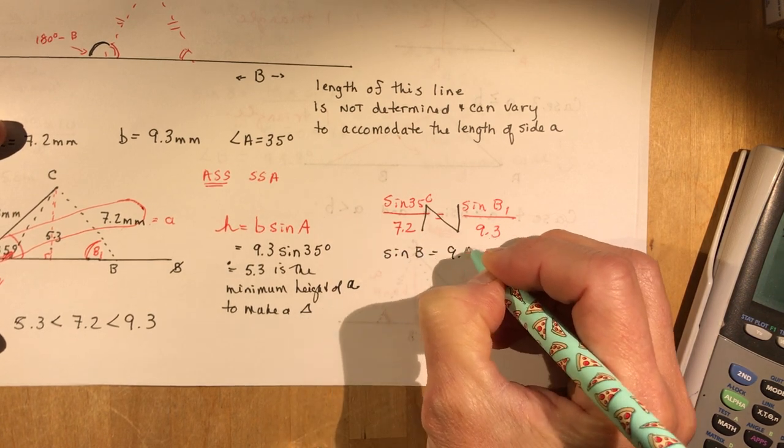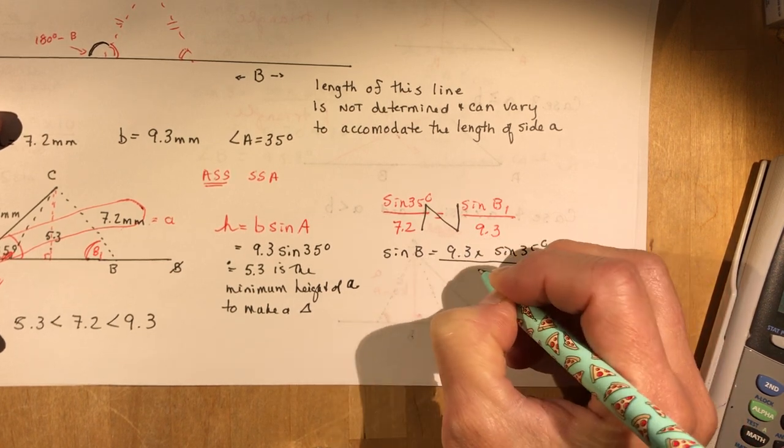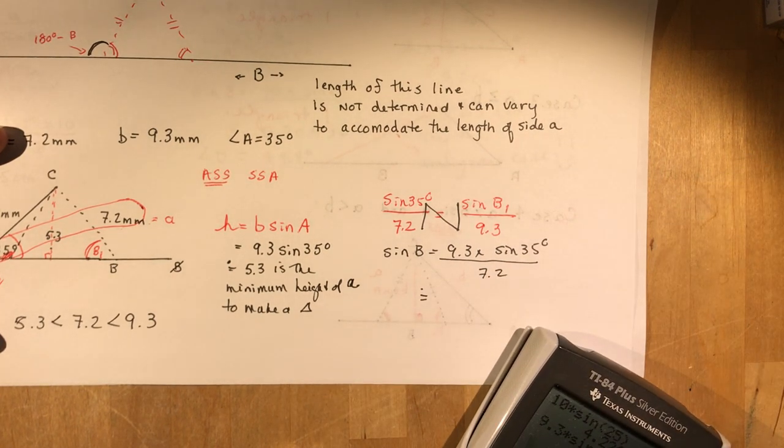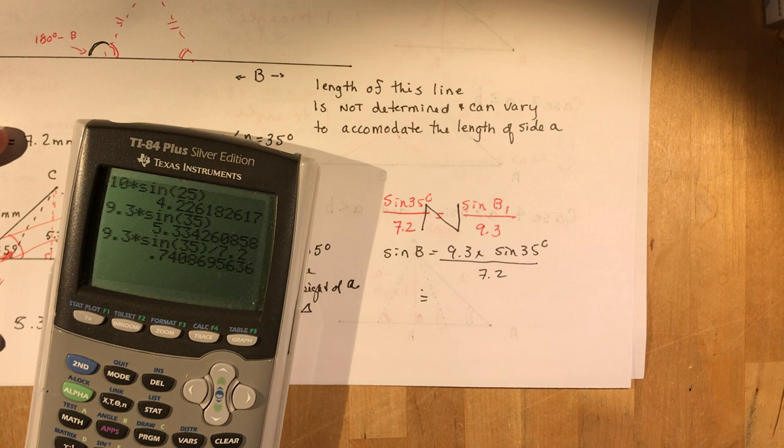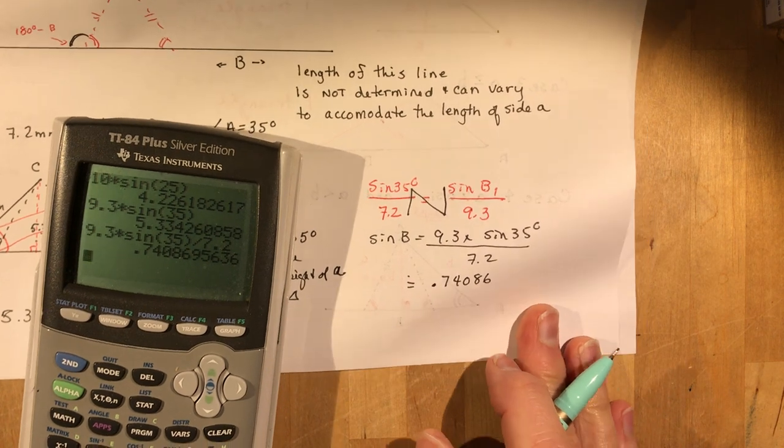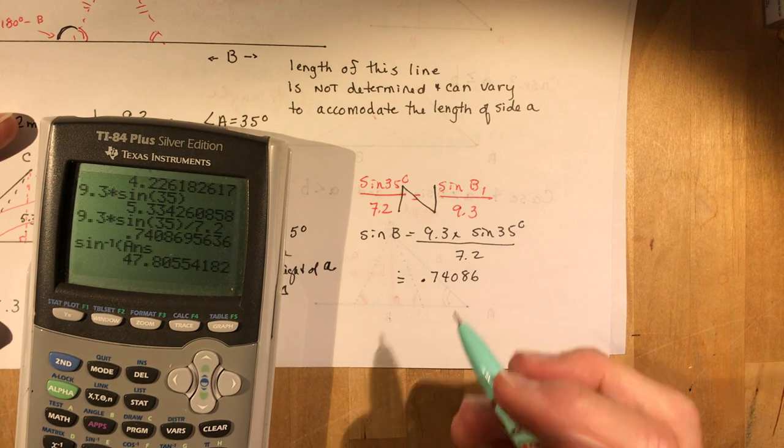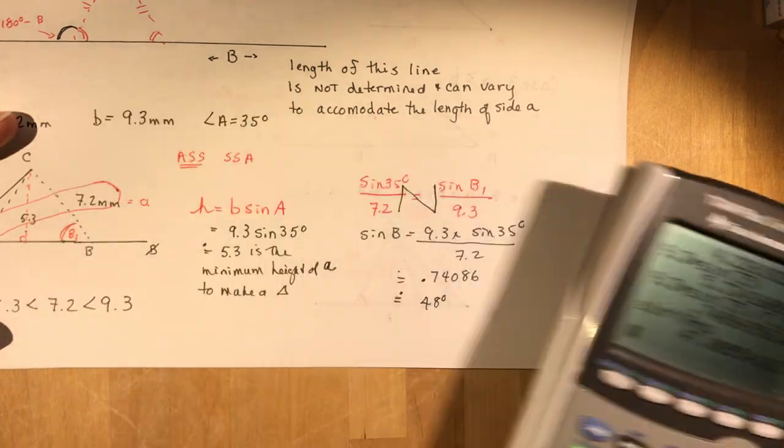And it said to the nearest degree, nearest tenth of a centimeter for length. So I'm going to do 9.3 times sine of 35 divided by 7.2 and I get 0.74086. Remember that's your ratio and I want the angle so I'm going to do second sine, second answer and that gives me approximately equal to the nearest degree 48 degrees.